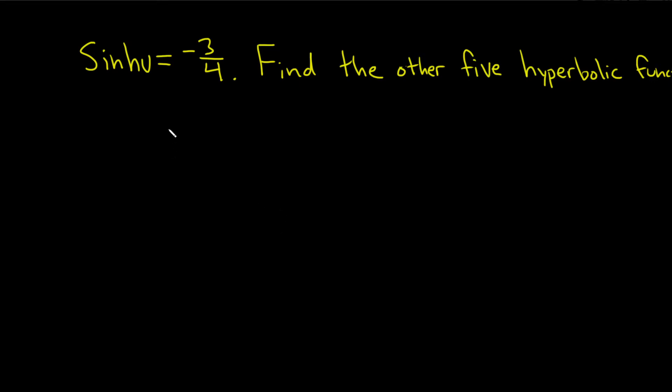In this problem, we're given that the hyperbolic sine of u, sinh(u), is equal to negative three-fourths, and the question is to find the other five hyperbolic functions. So the way we're going to do it is we're going to start by using an identity: cosh²(u) minus sinh²(u) is equal to 1. And we're going to use this identity to basically find cosh(u). And once we have cosh(u), we are pretty much set because we can find the rest of them.